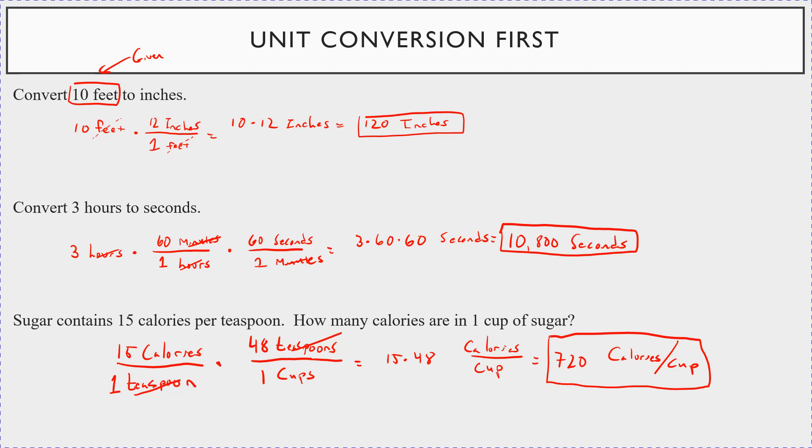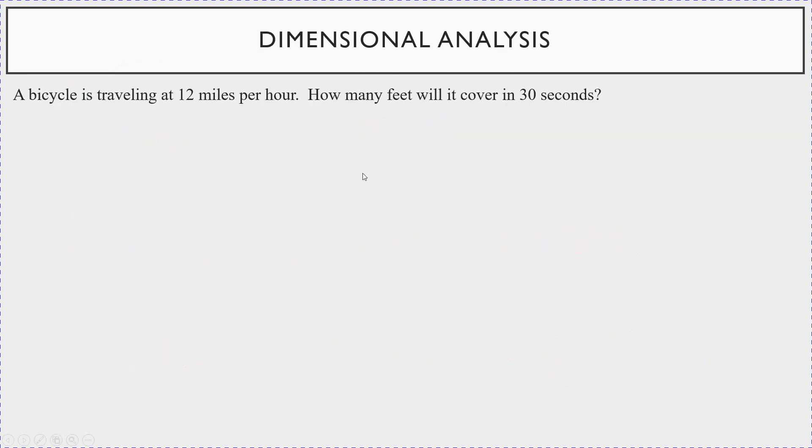All right. So I'm going to end on two harder problems, two much harder problems. And this one is pretty intense. So let's watch what I do as we go through this. All right. So a bicycle is traveling 12 miles per hour. So this is what you're given to start. You're given that the bike itself is going 12 miles per one hour. How many, this is so weird. How many feet will it cover in 30 seconds? Oh my gosh.